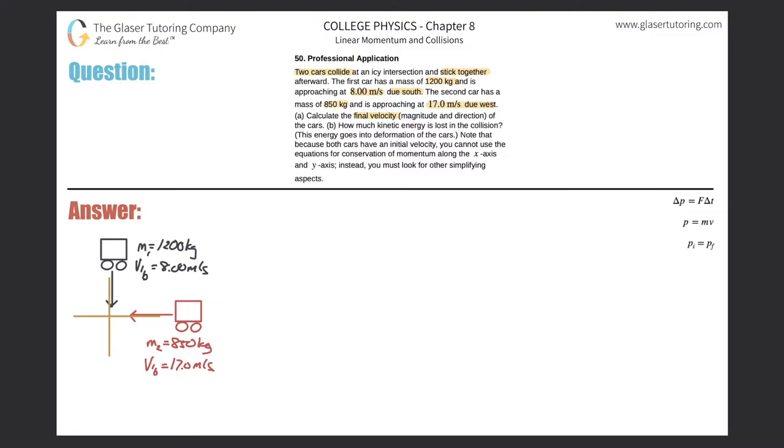it says this energy goes into deformation of the cars. Note that because both cars have an initial velocity, you cannot use the equations for conservation of momentum along the x and the y-axis. I think what they're trying to say is that we can't look at this analytically. We have to look at it more graphically first. But we still do have conservation of momentum.